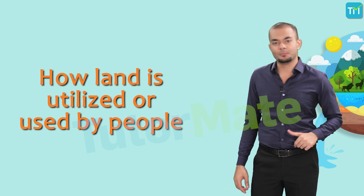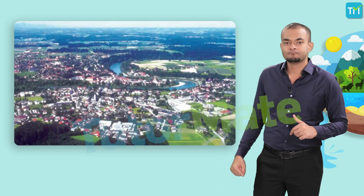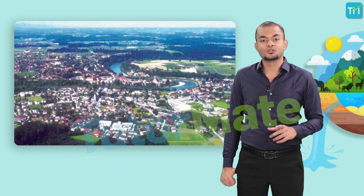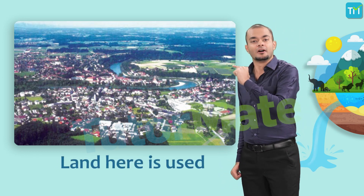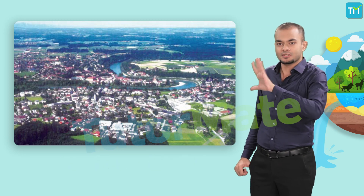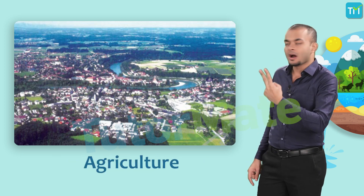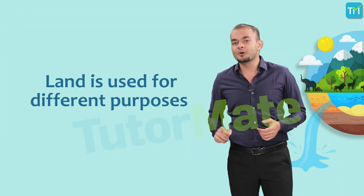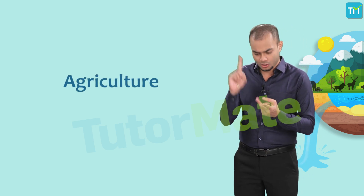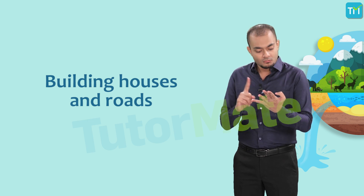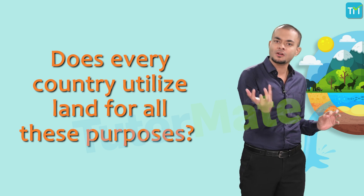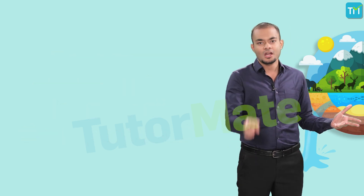Take a look at this picture — this is Salzburg in Austria. You can see how the land here is used in many different ways: for building houses, for agriculture, for grazing animals, and so much more. Land is used for various purposes such as agriculture, forestry, mining, building houses and roads, and even setting up industries. These activities are termed as land use, and its use is determined by physical factors.